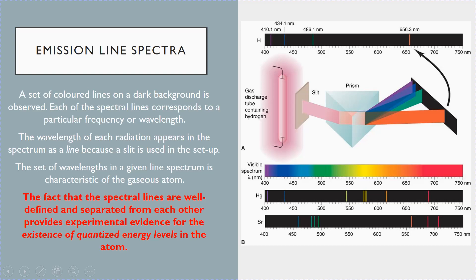So for example, if instead of hydrogen it is mercury, you will obtain the line spectra for mercury. Or at the bottom, you will see the line spectra for strontium. So the key understanding is that because the spectral lines are well defined and separated from each other, as opposed to being continuous,